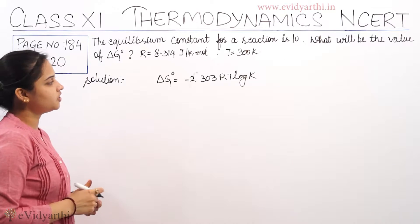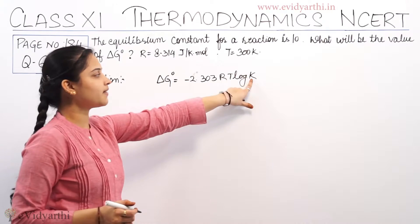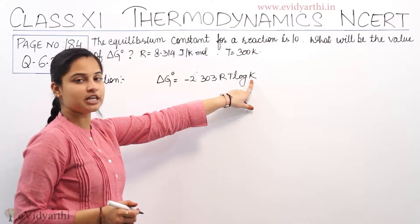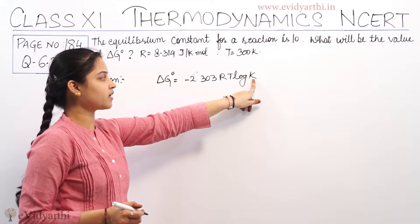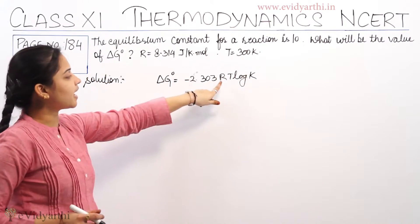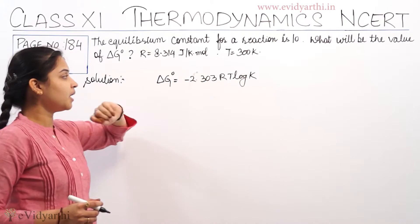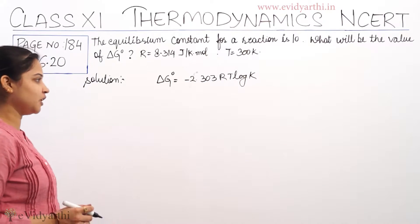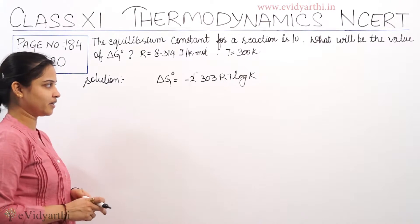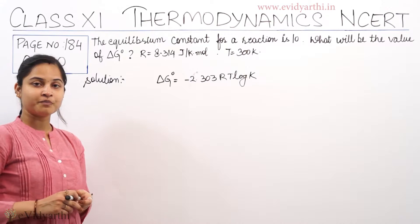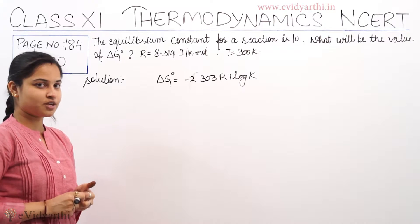With the conditions given, we have the K value — it is the equilibrium constant — along with the gas constant and the temperature. We have three values, so it is very simple. Now we calculate the value of standard Gibbs free energy.